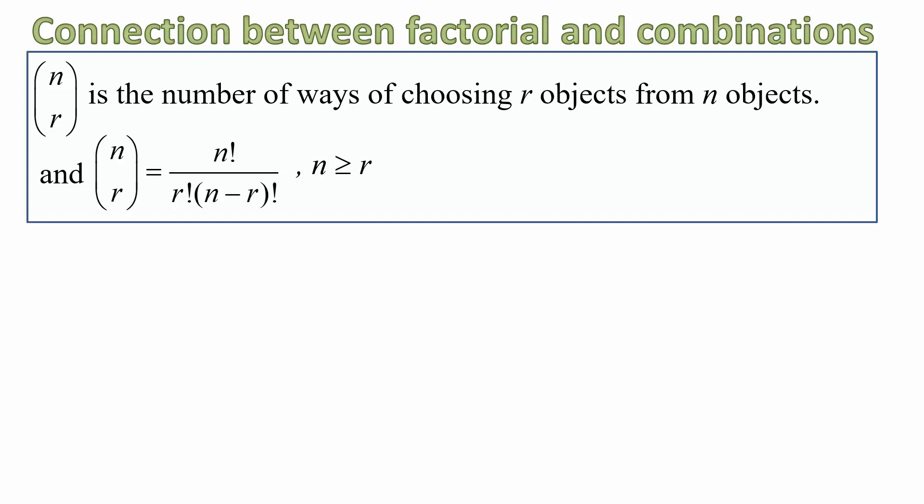N, R in those set of brackets where N is a positive whole number that we've used for factorial. And R is another positive whole number where R is not greater than N. And that will represent the number of ways of choosing R objects from N objects. And to work that out, we have the formula shown there.